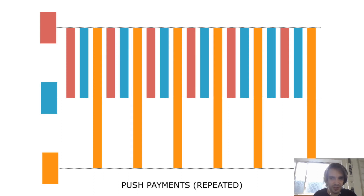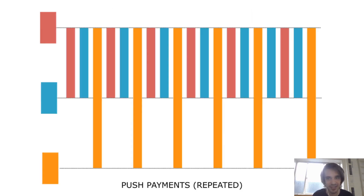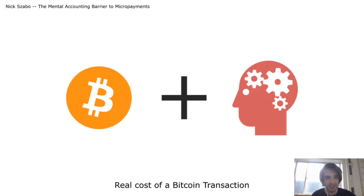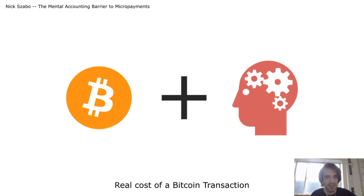The main problem with this model is that if you have lots of interactions with Bob — imagine you put them on a horizontal axis — you have repeated interactions between Alice and Bob. Every time Alice wants to pay, she has to make a Bitcoin transaction. The main problem is not really the transaction fees, even with fees being high nowadays, but the high mental cost of doing those kinds of interactions.